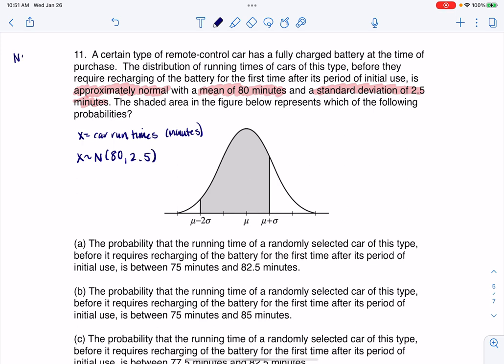So at this point, I know I have a normal distribution. If they talk about having a sample of like 40 cars, then I'd be on a sampling distribution. So let me see if the next thing says that. The shaded area in the figure below represents which of the following probabilities. So there is no sample in this case. So this is just going to be a regular normal distribution question.